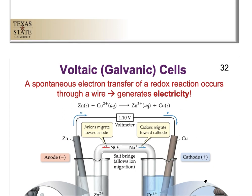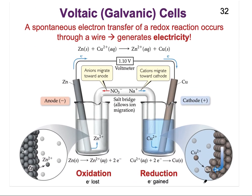In a voltaic cell or galvanic cell, what we're doing is utilizing a spontaneous reaction that is a redox reaction where electron transfer happens, and we're going to enable that to happen in two separate cells. The electrons being transferred are going to move from one cell to the other, generating electricity. Where I have the voltmeter, I could actually have a light bulb or a cell phone or whatever it is that I want to power through this chemical reaction.